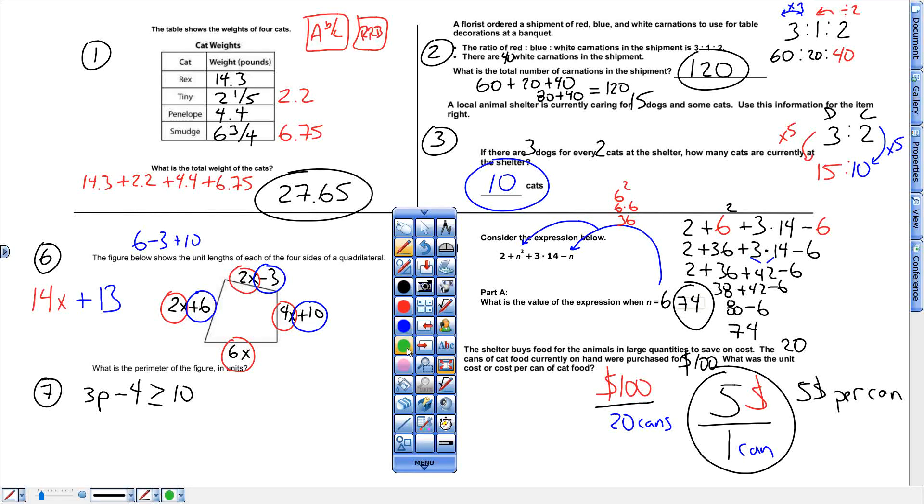All right, last one. An inequality. Solve it the way you would normal. So add 4. These go away. Bring down 3p, more than or equal to 14. Divide by 3 right there.